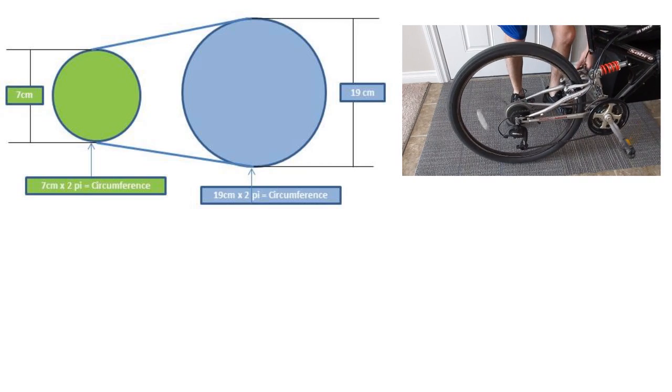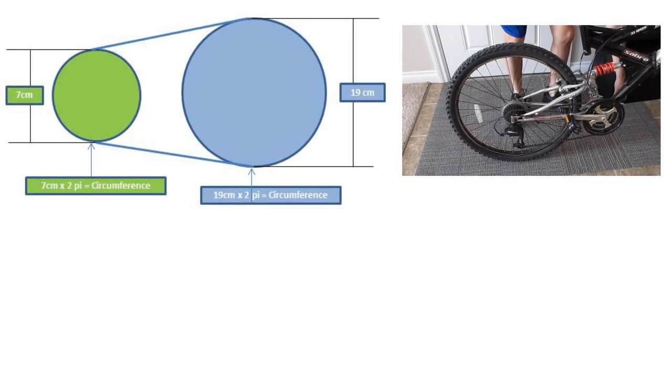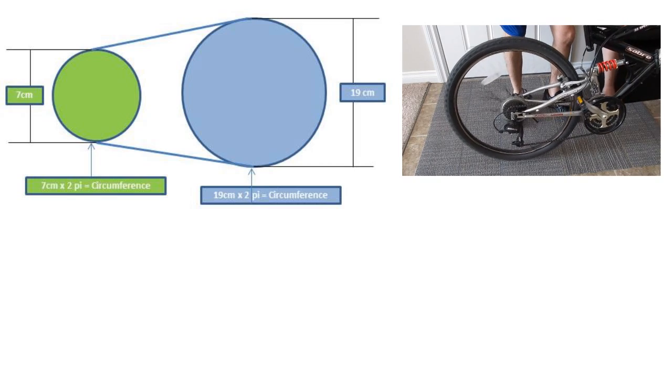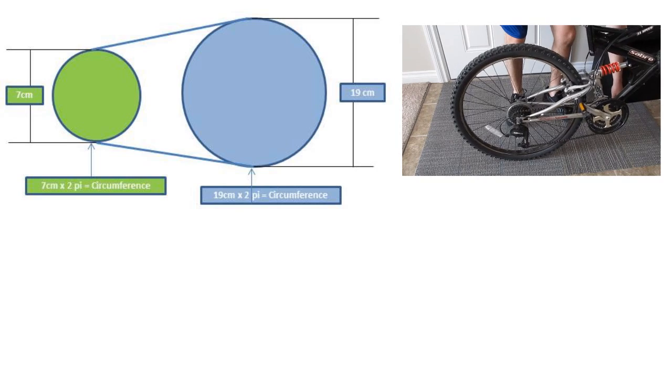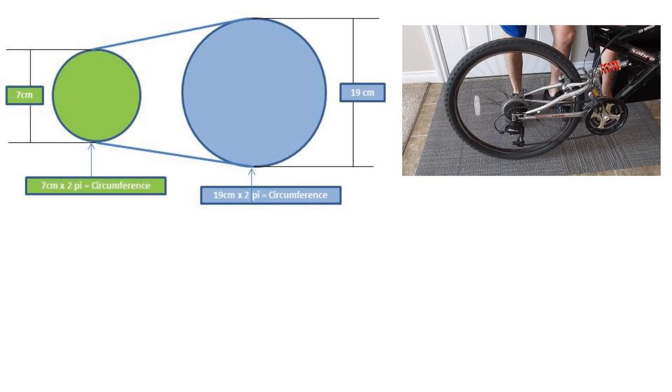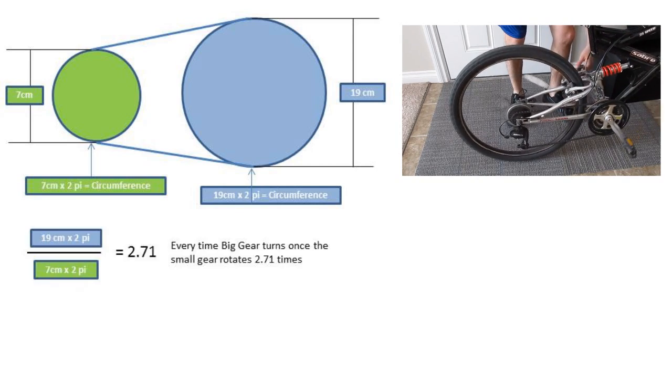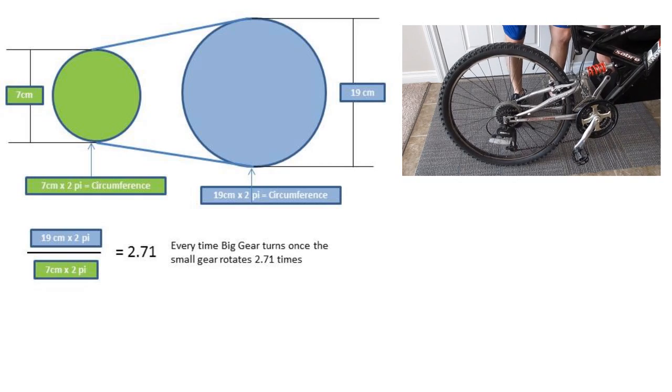Now on a bicycle there is a gear attached to the pedal that is 19 cm diameter to chain center. There is also a gear on the wheel that is 7 cm diameter to chain center. Now to get the gear ratio we can take the circumference of the 19 cm gear and divide it by the circumference of the 7 cm gear.